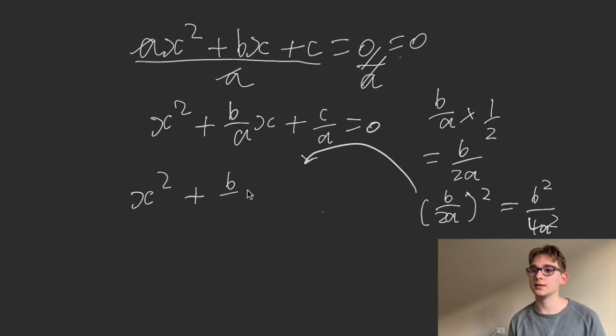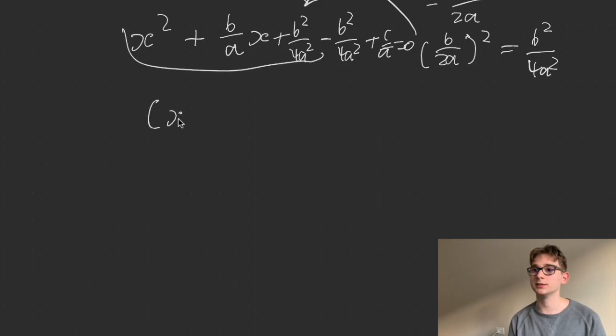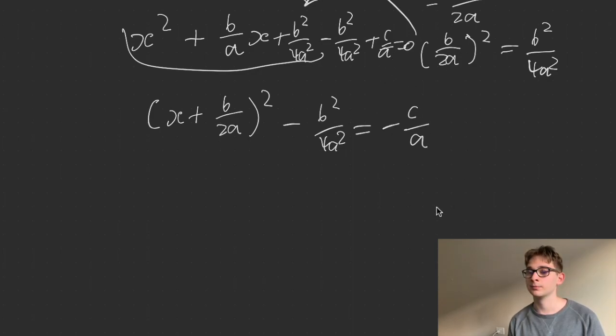And you can bring this fact to here. x squared plus b on a x plus b squared on 4a squared minus b squared on 4a squared again, plus c on a equals 0. And now, as we already know what we can do with this bit, we get x plus b on 2a squared minus b squared on 4a squared. Let's move the c on a to the other side. So you get minus c on a.